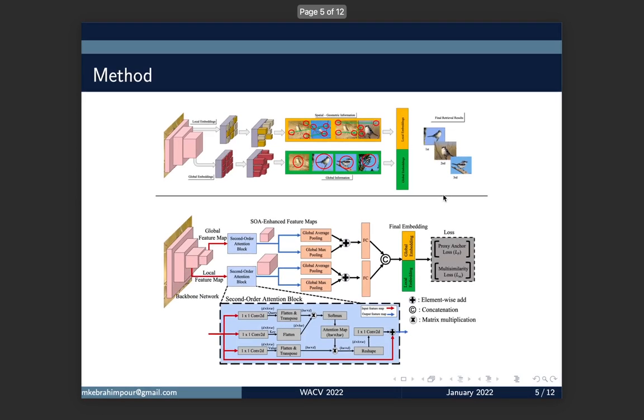Our method looks for both local and global representations. In local representations, we are looking at the geometry in the image, and in the global representations, we are looking at the most abstract features. The combination of these two is essential in deep metric learning.